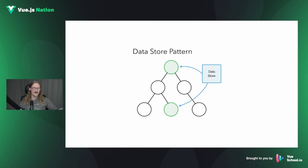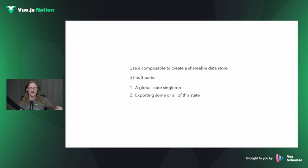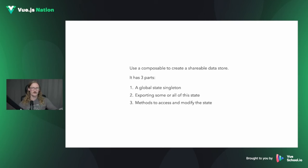That leads us to the data store pattern, which lets us directly inject the state that components need right to those components without having to pass things around all over the place. This also works the opposite way for events and updating state. We implement this pattern using a composable that lets us create shareable state. The first part is a global state singleton, then we share some of that state among different components while keeping some state private, and we may add business logic methods that work on that state.